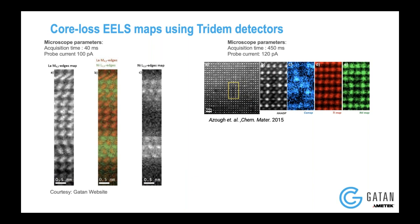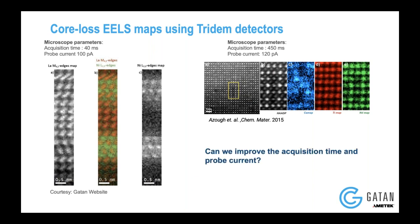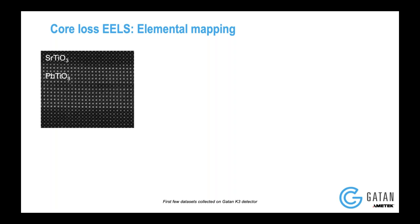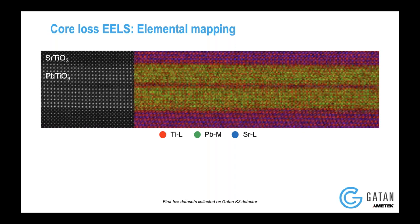The challenge was to improve the acquisition time as well as lower the probe current to make sure that chemical mapping could be done with very little time. When K3 was installed, I was lucky enough to be a postdoc at exactly that time at LBL. We have this very nice example of a strontium titanate / lead titanate superlattice, and it's amazing that with the help of elemental mapping using the K3 — one of the first datasets collected on K3 — you can actually see even a single unit cell of strontium titanate.